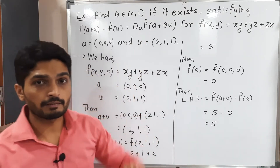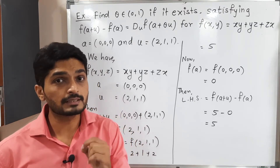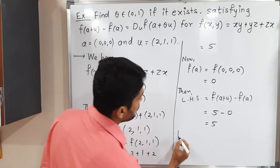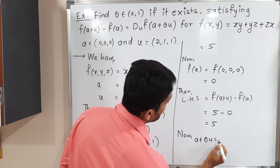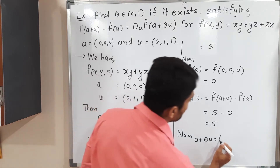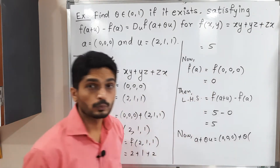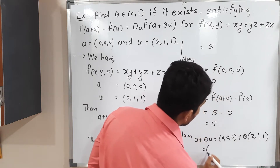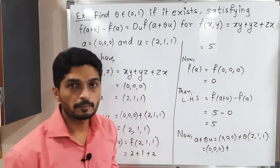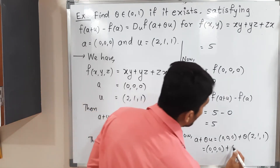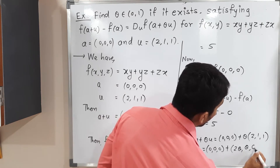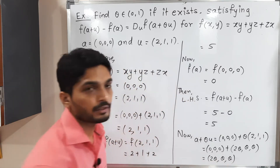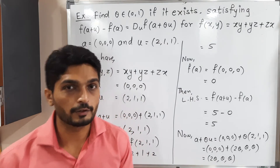Now let us work on the right-hand side. Before computing the directional derivative, we find the value of a + θu. With a = (0,0,0) and u = (2,1,1), multiplying each component of u by θ gives (2θ, θ, θ). Adding a: a + θu = (2θ, θ, θ).